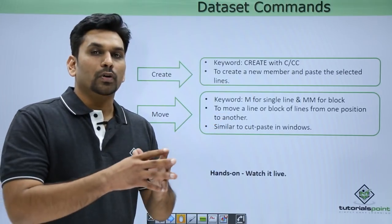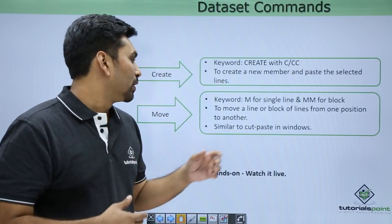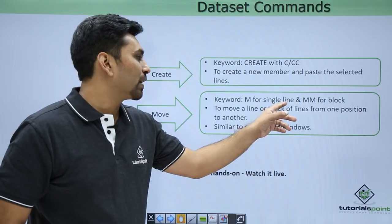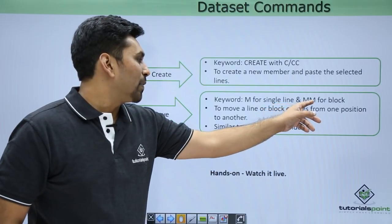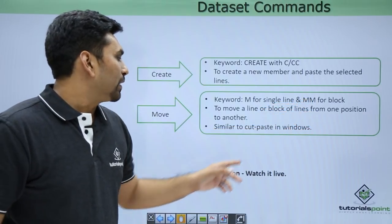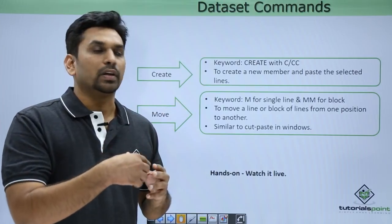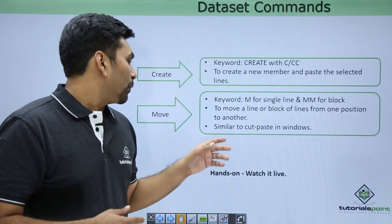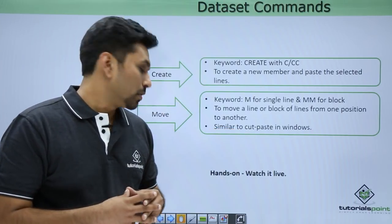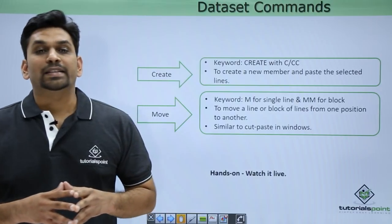The move command is used for moving lines from one place to another. Use M for a single line and MM for a block of lines. Then type A (after) or B (before) accordingly to specify the destination. It is similar to cut and paste in Windows.